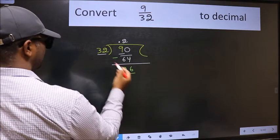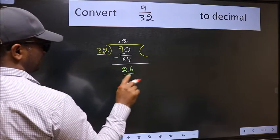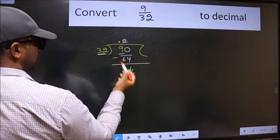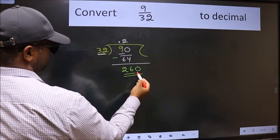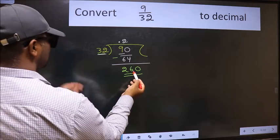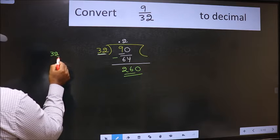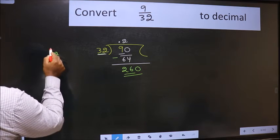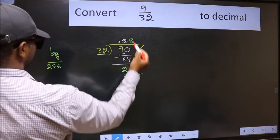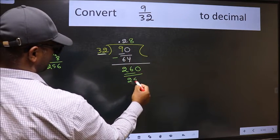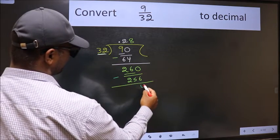Now here we have 26 and here 32. 26 is smaller than 32, and we already have the decimal, so we can directly take 0. So 260. A number close to 260 in the 32 table is 32 times 8. 8 times 2 is 16, 8 times 3 is 24. 8 times 32 is 256. Now we should subtract. We get 4.